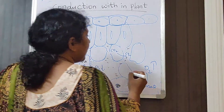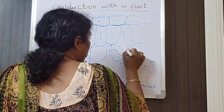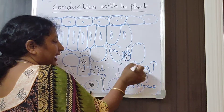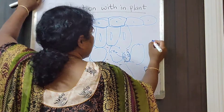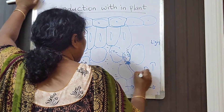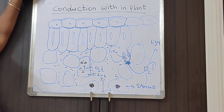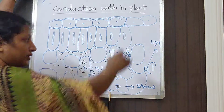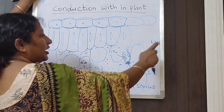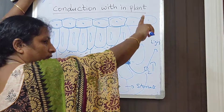Once carbon dioxide has come outside the cell, it is now high in the intercellular spaces compared to the atmosphere. So again by diffusion, high to low, it goes outside into the atmosphere through the stomata.